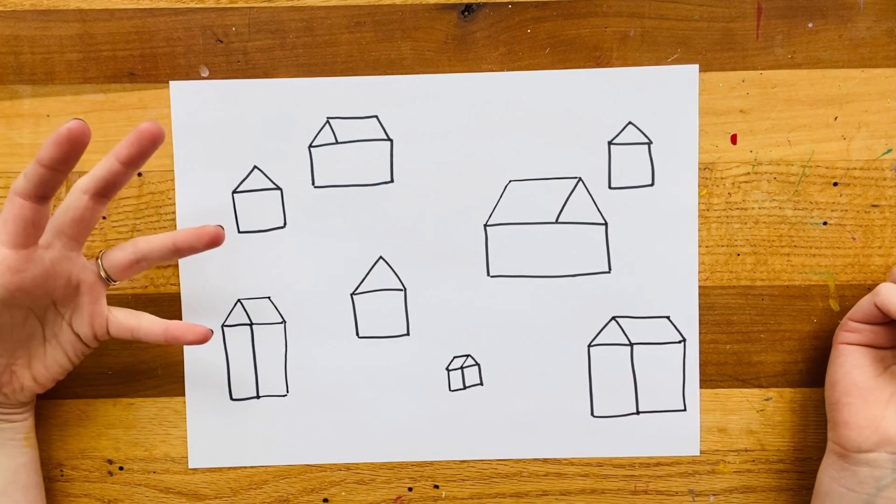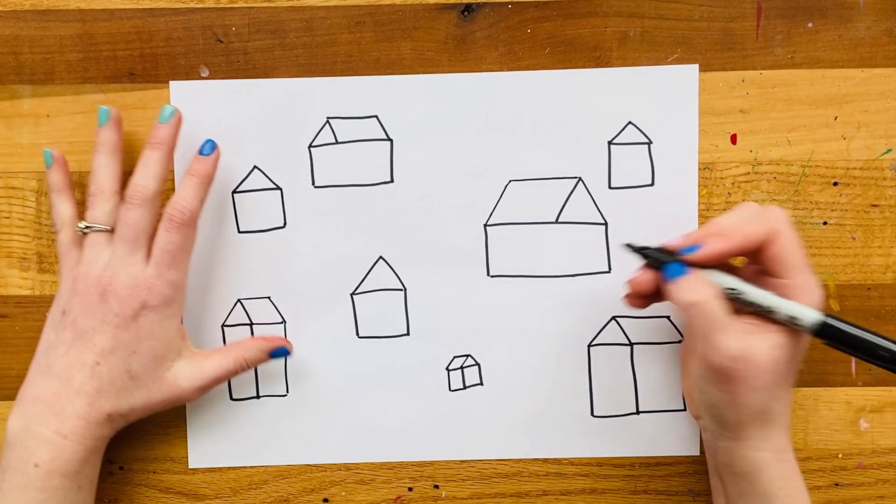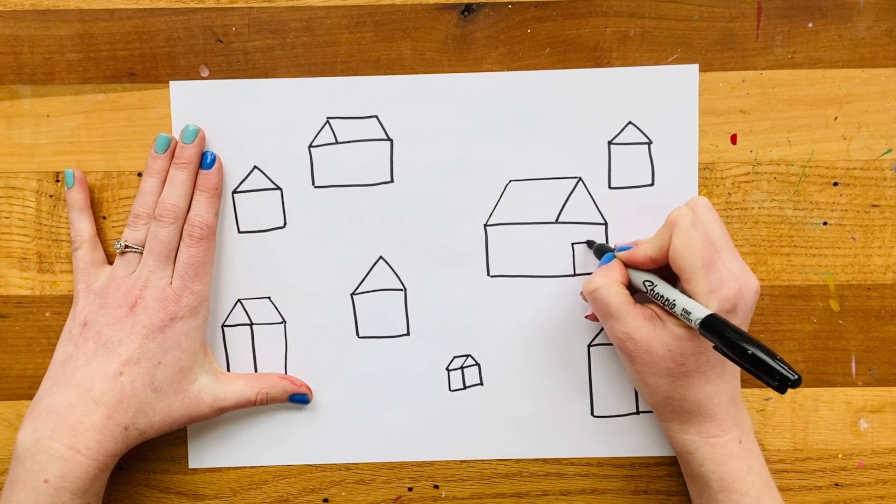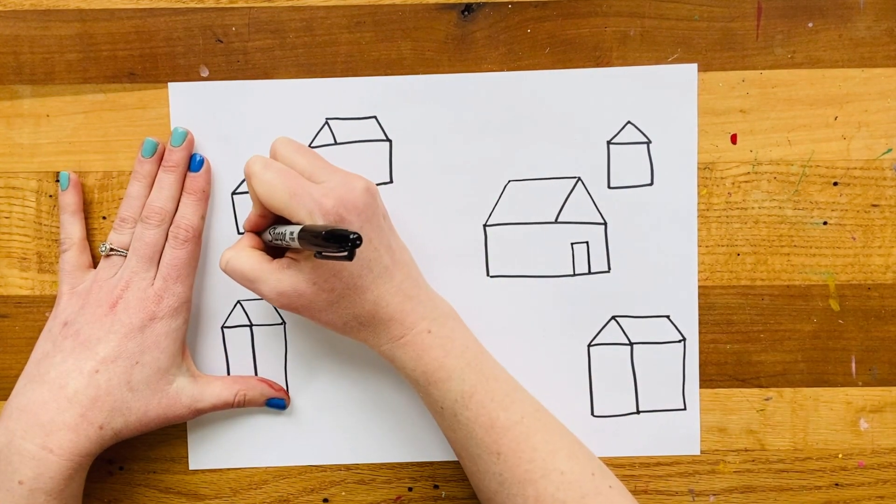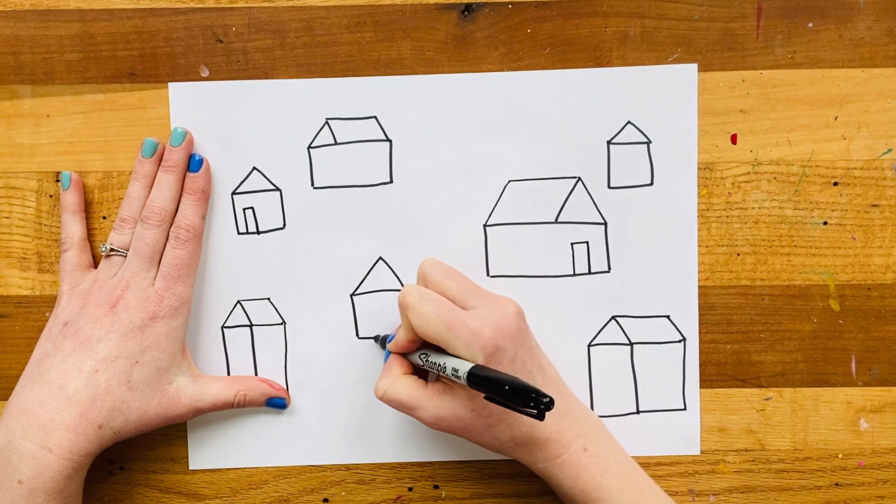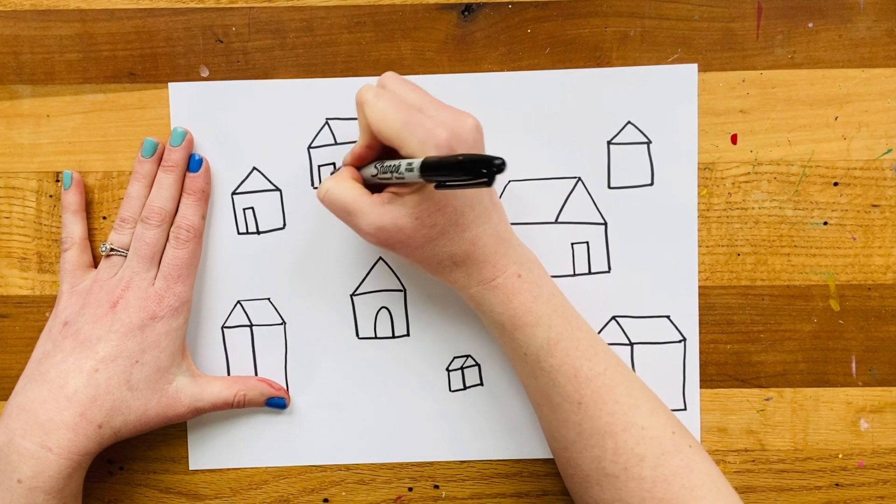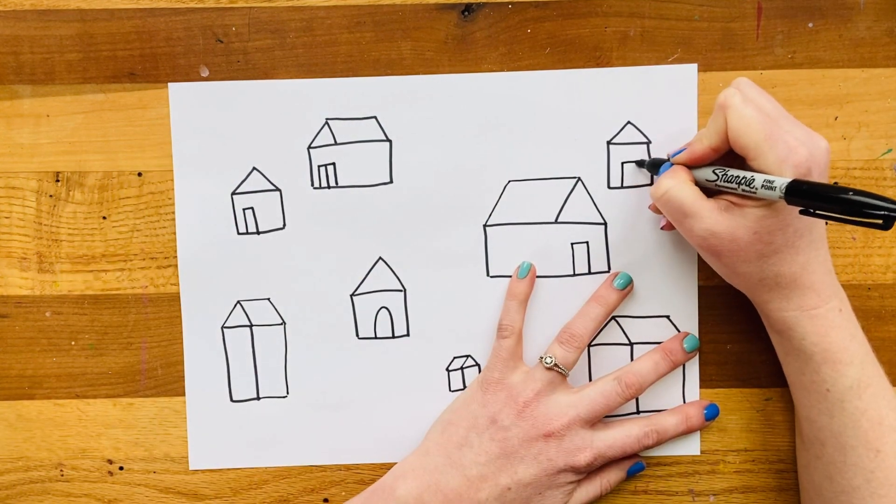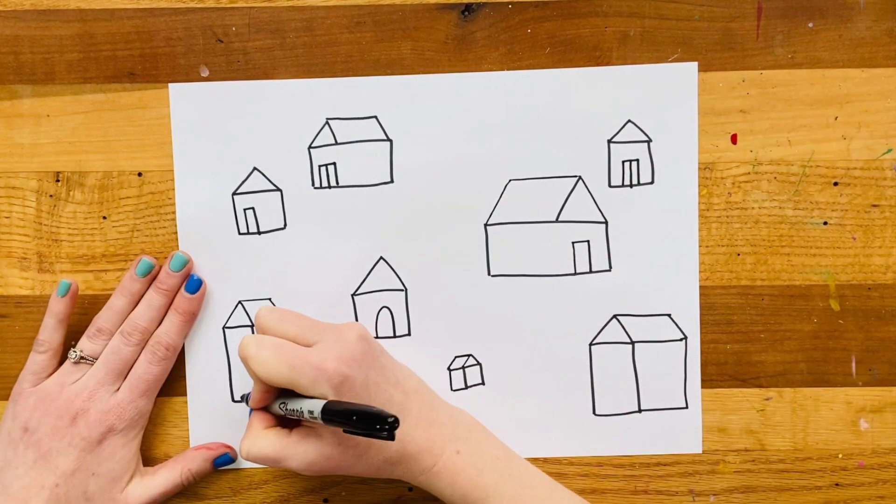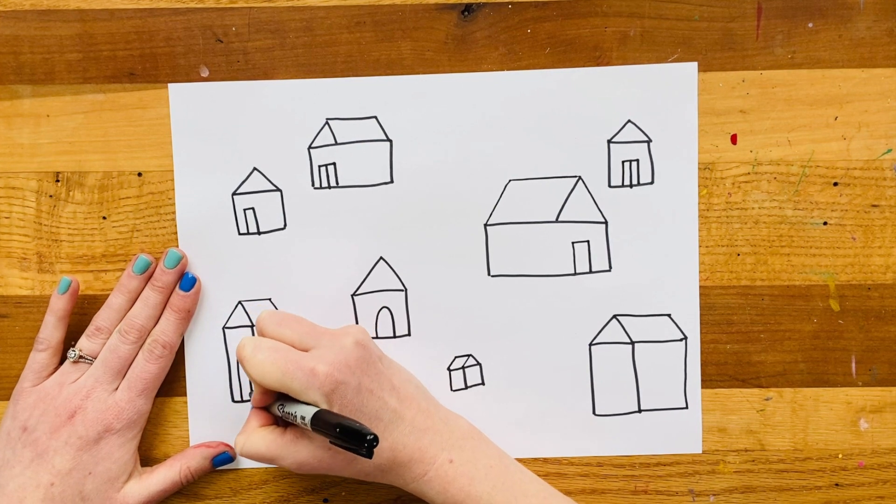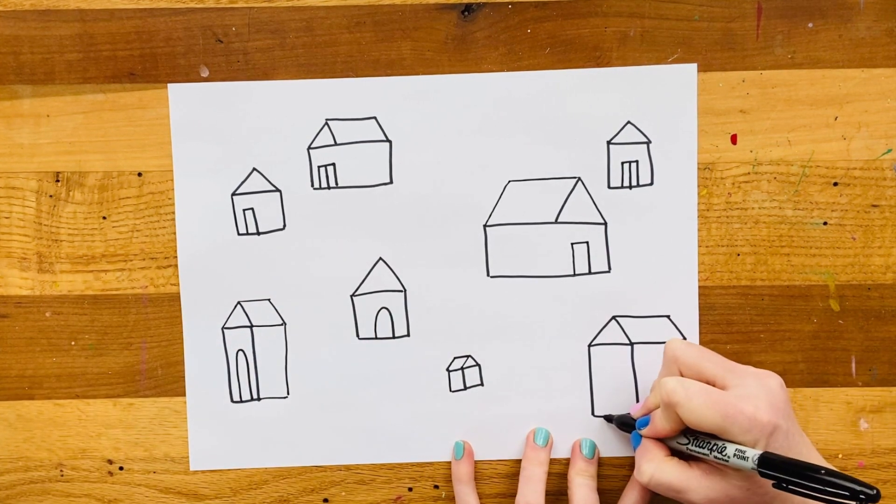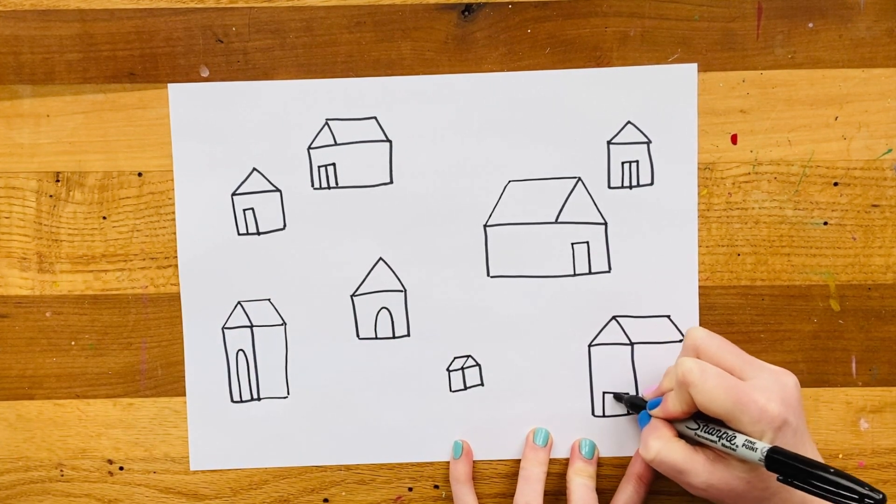Now is the time where you get to add your final details. So of course, our houses need doors. And our doors can be rectangular. Maybe some of them are arched doors. Maybe some are double doors, where they have a line in the middle. So you guys get to pick as the artist what you want your doors to look like. Check it out. Super long, tall one, because this is a big building. There we go.